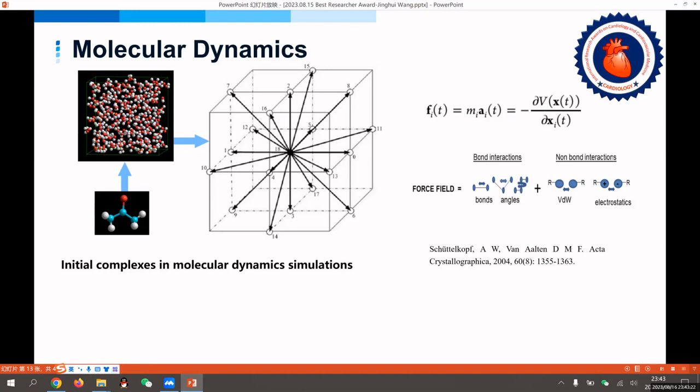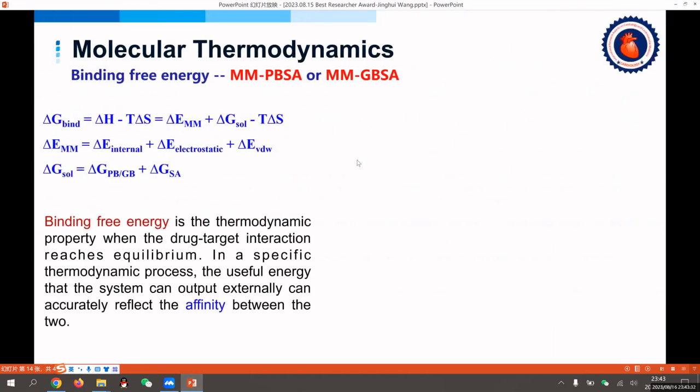Molecular dynamics can dynamically observe the binding process and effects of drugs and targets. The binding free energy is the thermodynamic property when the drug-target interaction reaches equilibrium. In a specific thermodynamic process, the system can output useful energy to accurately reflect the affinity between the two.